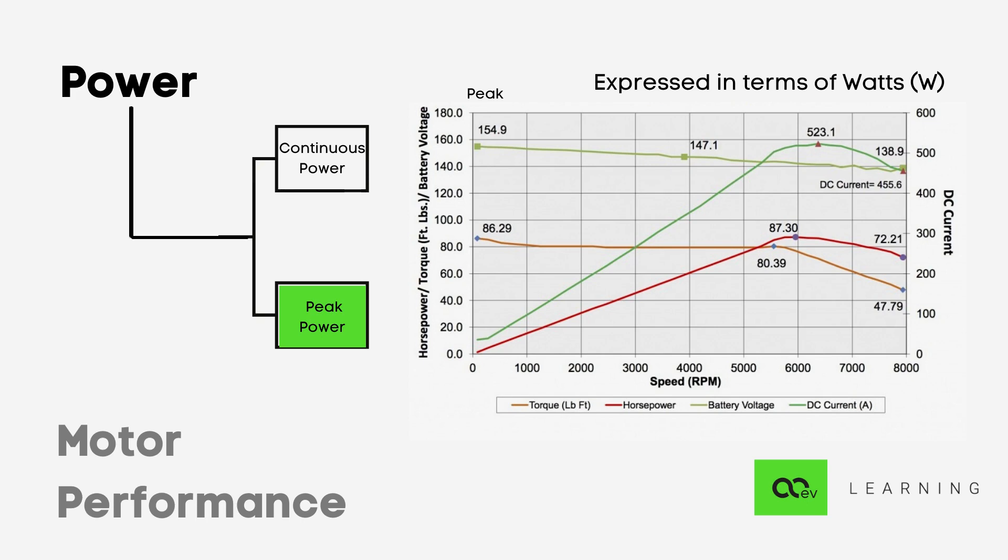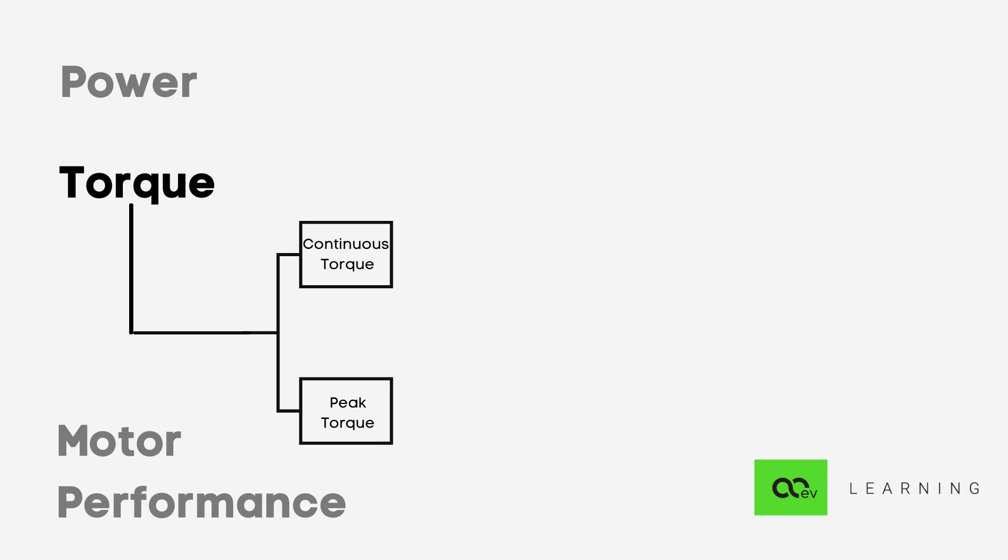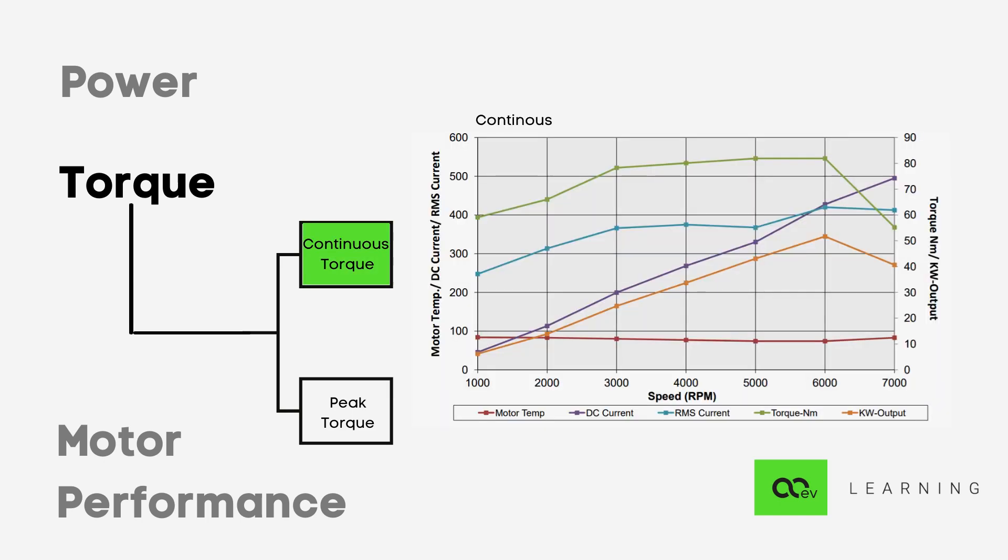Similar to power ratings, we have two types of ratings for torque as well: continuous and peak. They are used in the same context. We can get the continuous torque for long durations but are limited to shorter durations for peak torque.